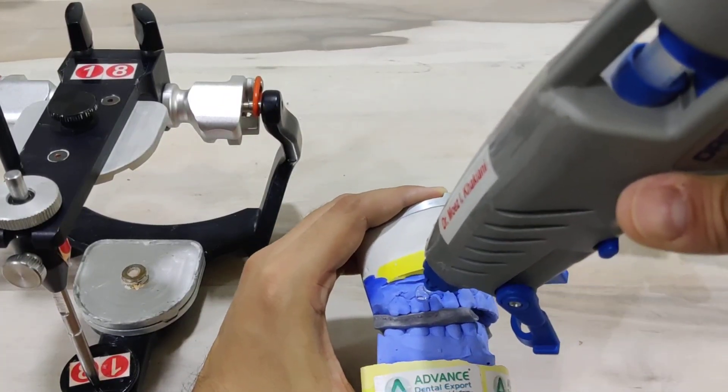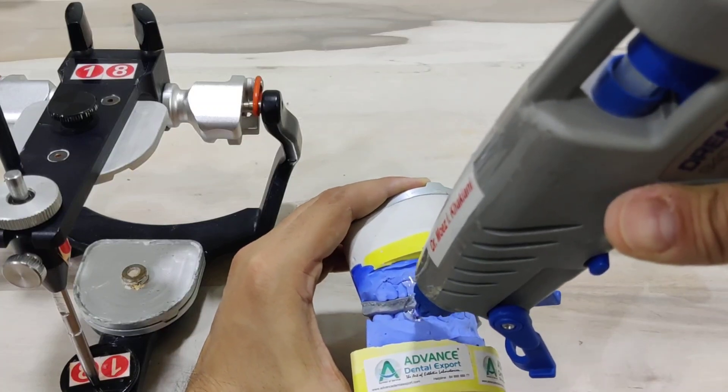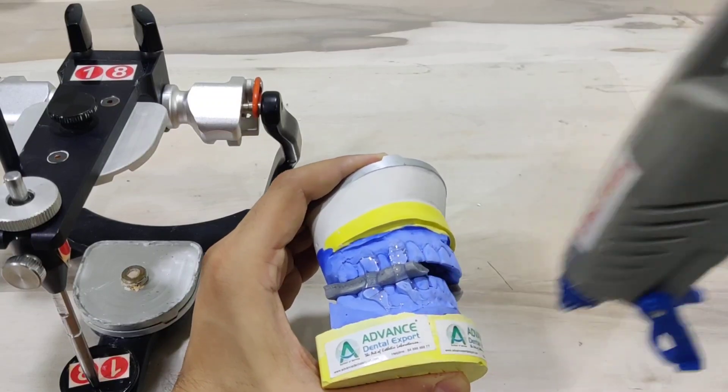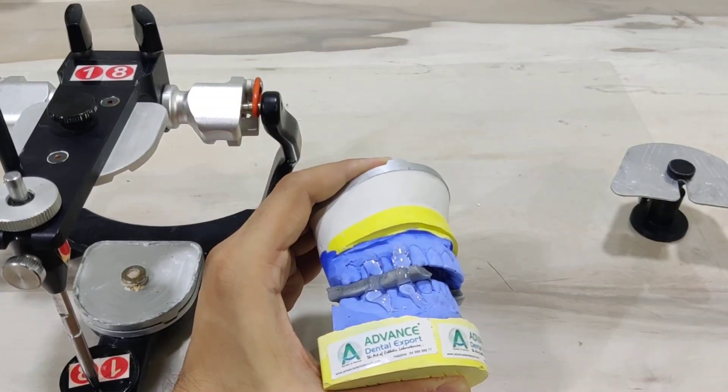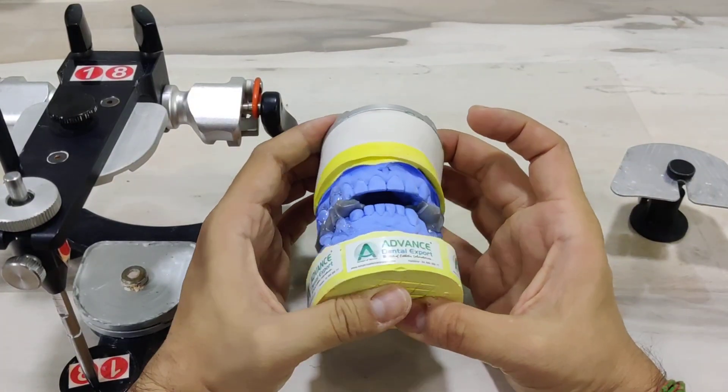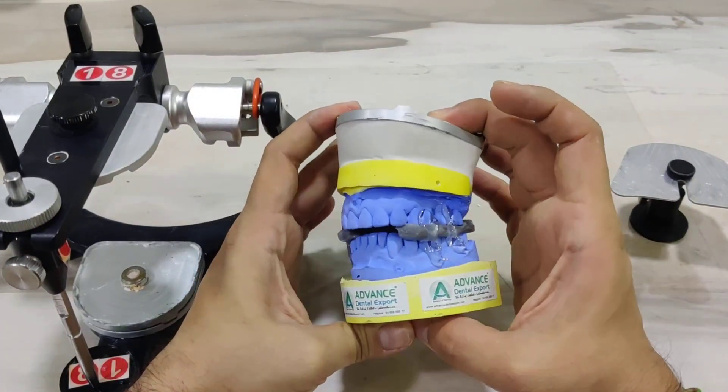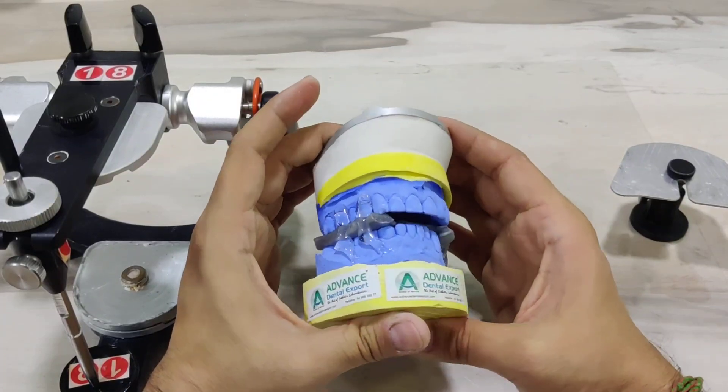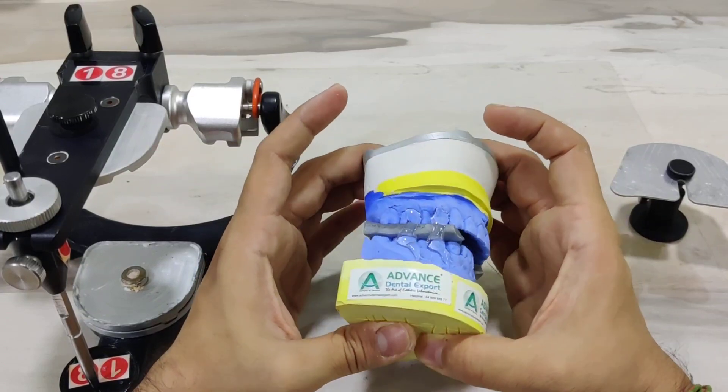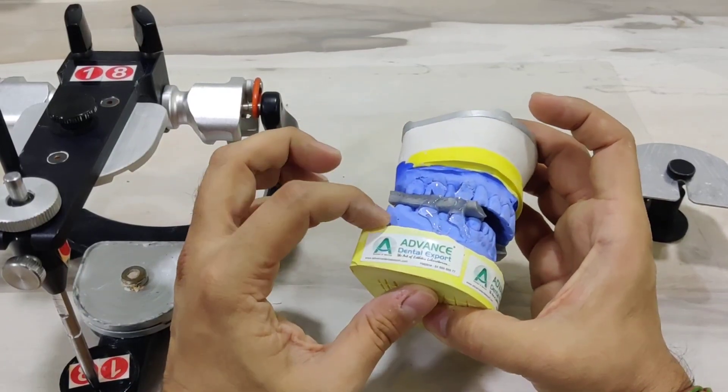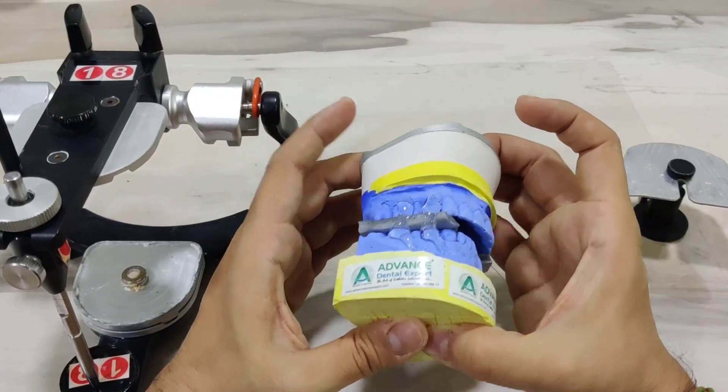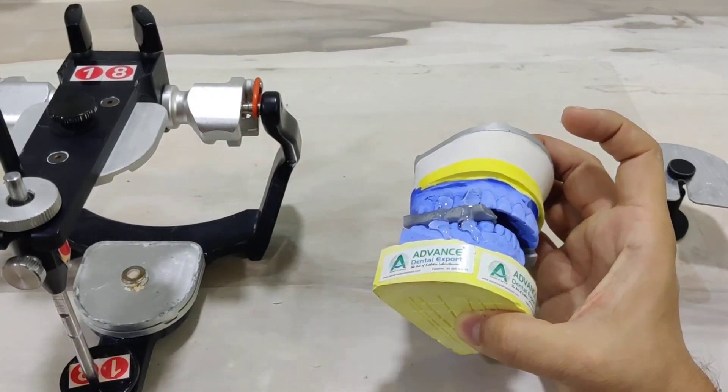There are various materials available to do this. I prefer to do this with the help of the glue stick because once the upper and the lower members have been mounted, this glue stick can very easily be separated from the cast without hampering the quality of the cast in any way. Now that this sets, it holds the upper and the lower member with respect to each other, making sure that this does not leave the wax wafer until my mandibular cast mounting is complete.